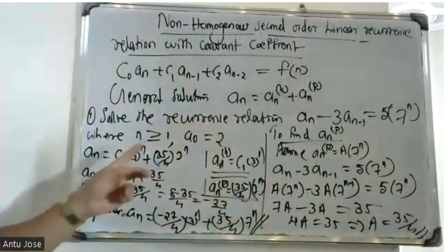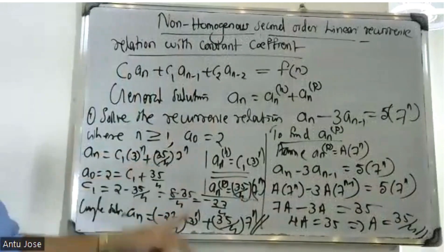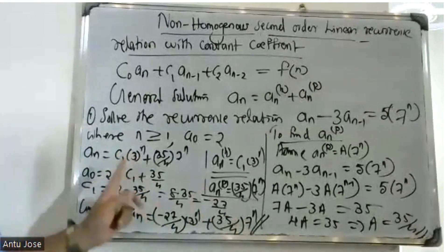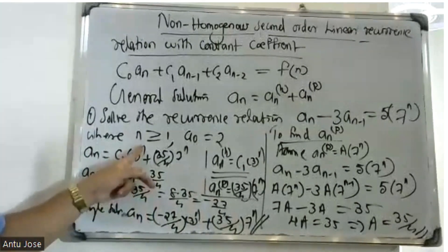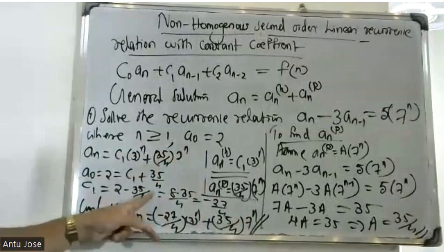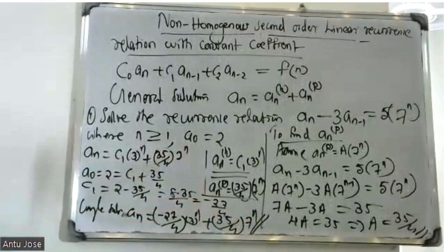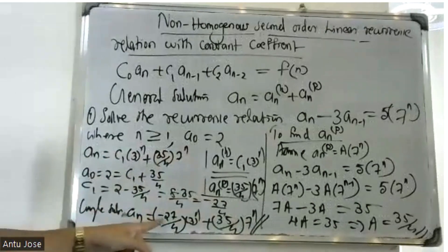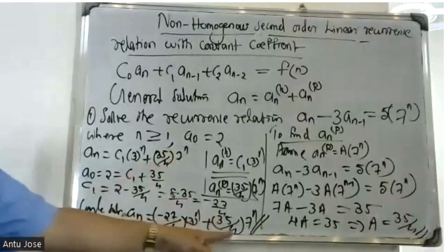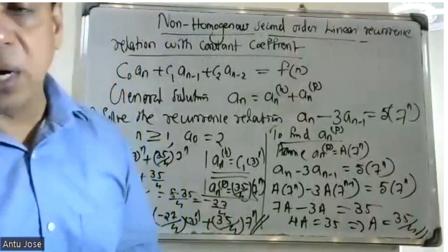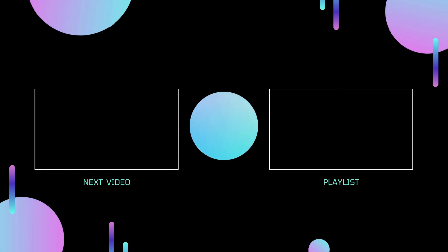The final solution is: a_n equals C1·3^n plus (35/4)·7^n, where C1 is determined by the initial condition. Thank you.